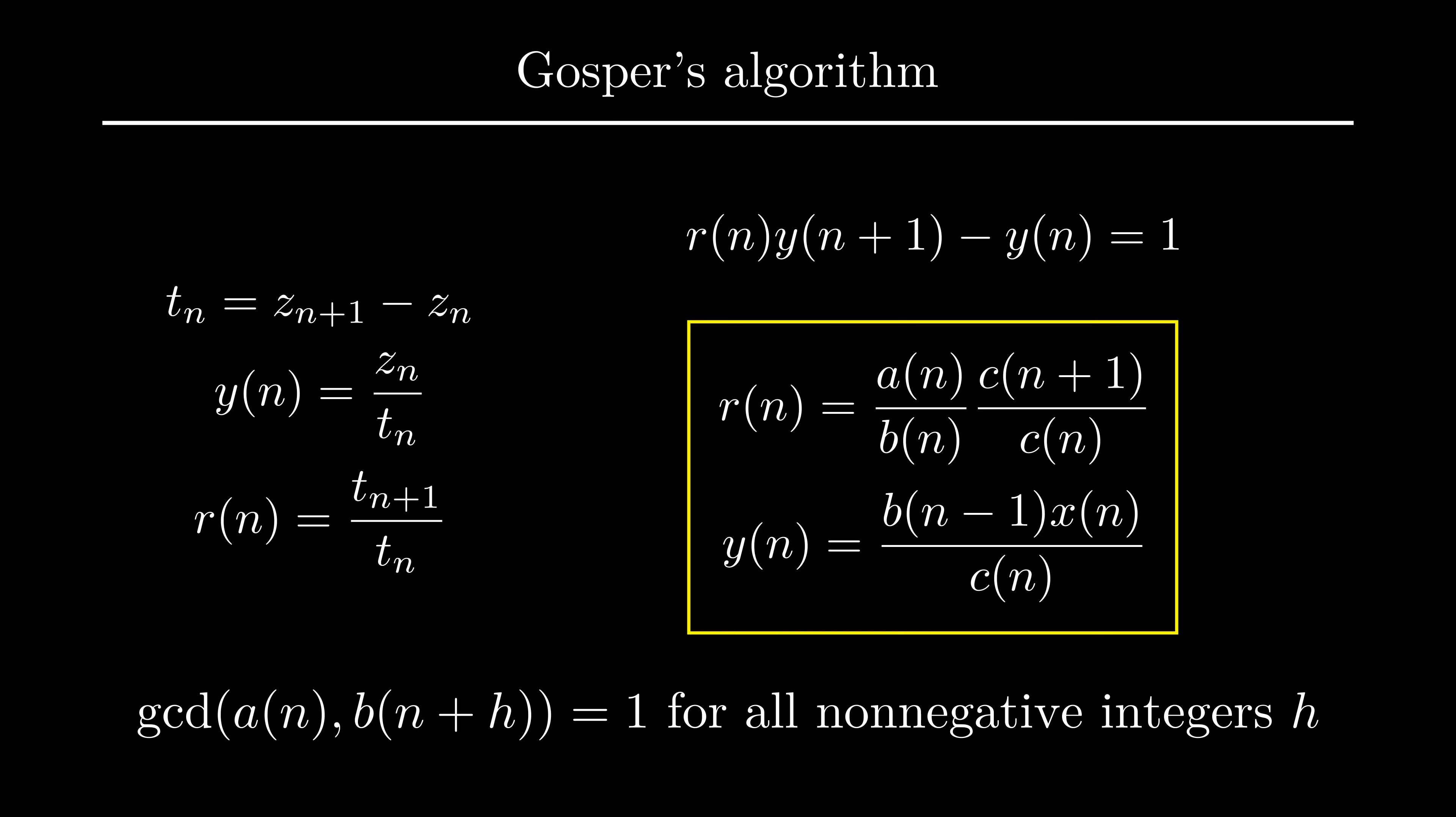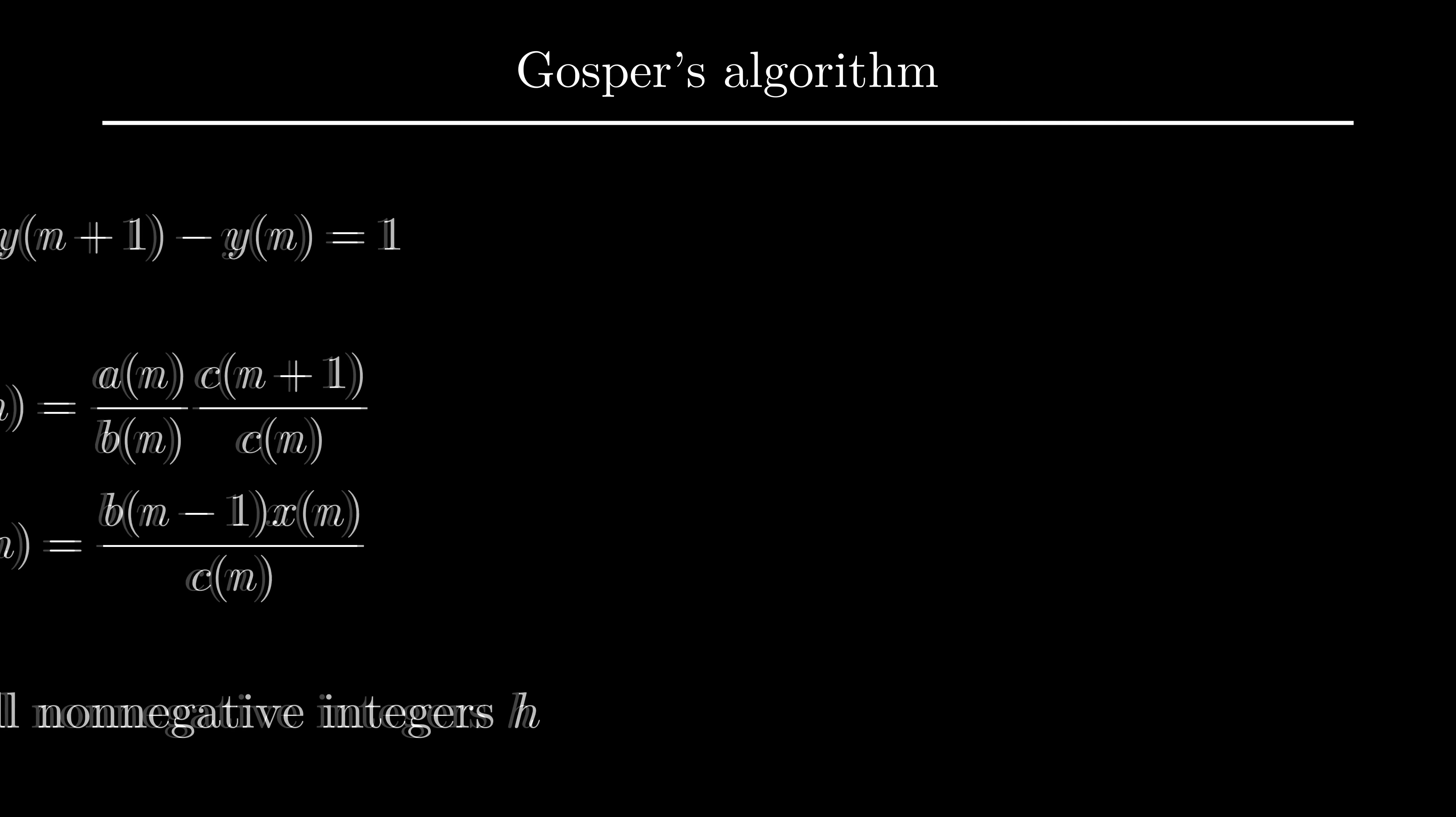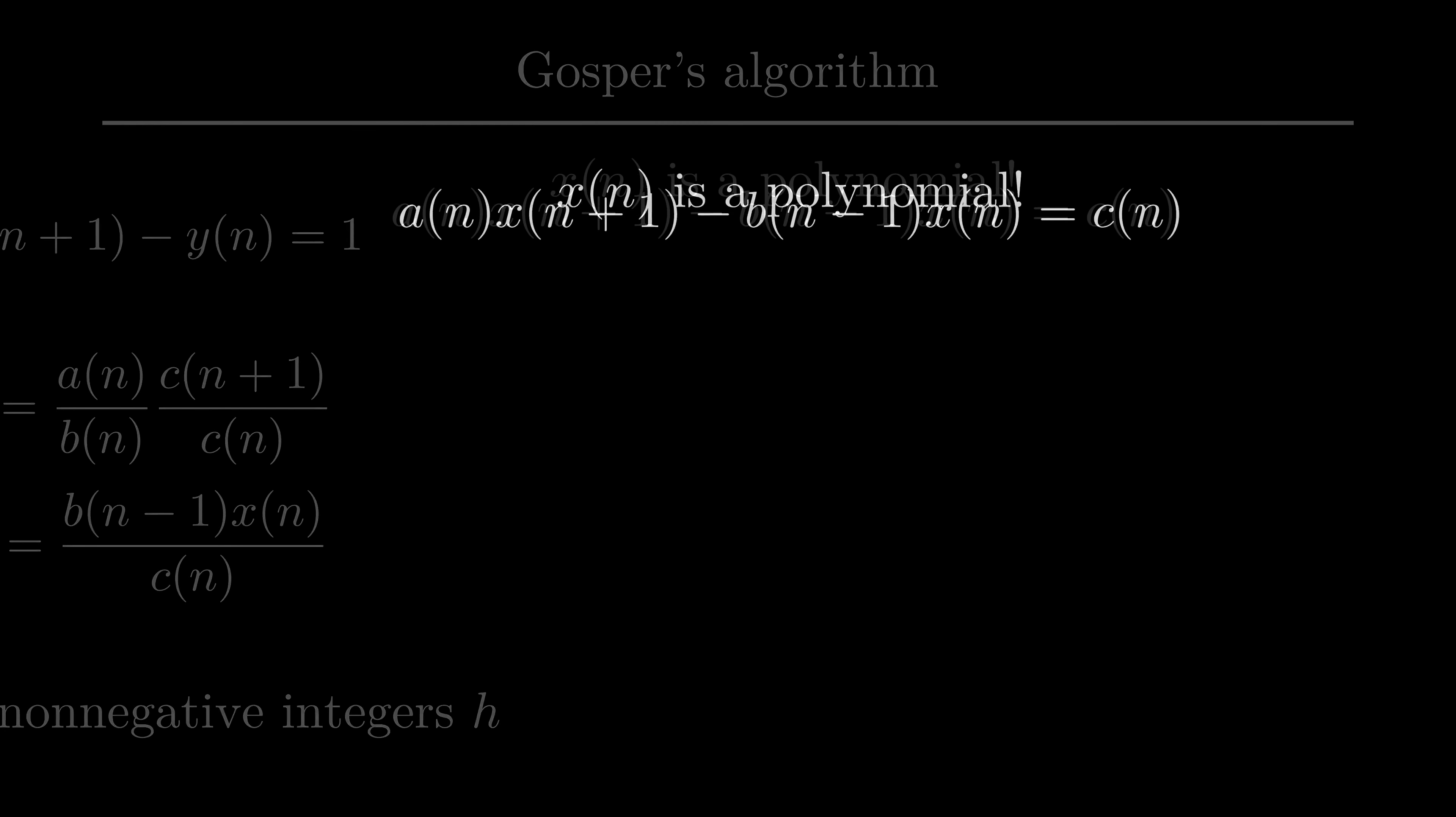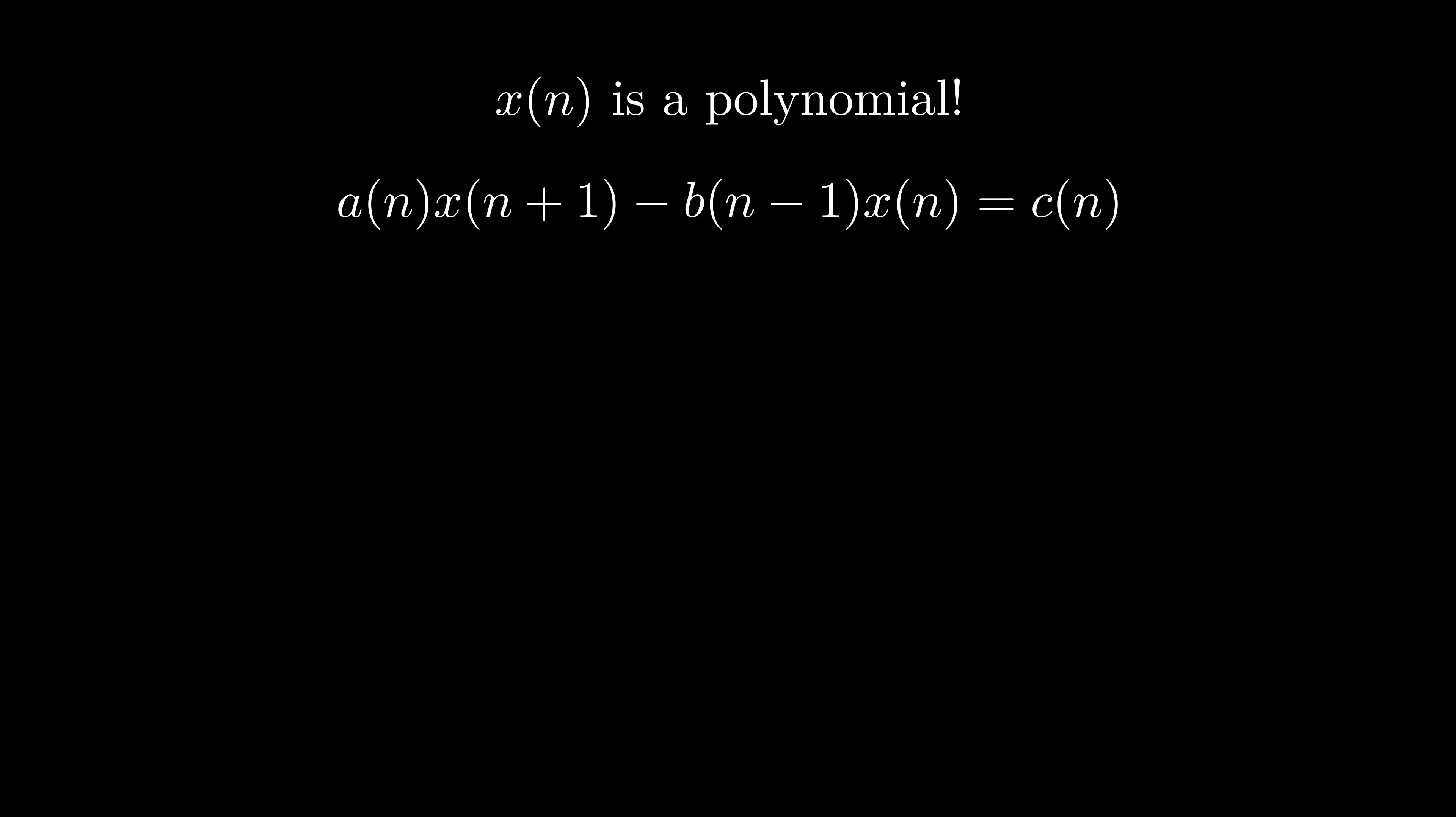Now that we've understood the setup, let's substitute our definitions of r and y into this equation. Here is where something magical happens. We mentioned before that x is a rational function. It turns out that we can prove that it is actually a polynomial. In this way, we have reduced the problem of solving for a rational function into solving for a polynomial.